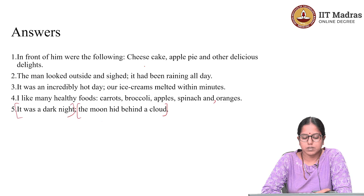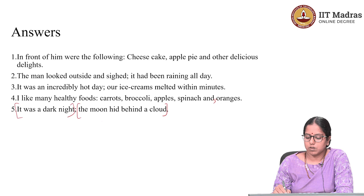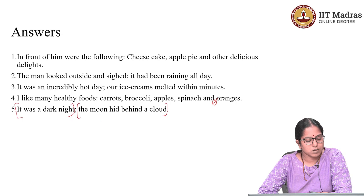The fourth sentence: 'I like many healthy foods: carrots, broccoli, apple, spinach and oranges.' Same as the first one — you separate items in a list using commas, and you do not put a comma before the last item. The fifth sentence: 'It was a dark night; the moon hid behind a cloud.' Again, two independent clauses, therefore you need to put a semicolon.